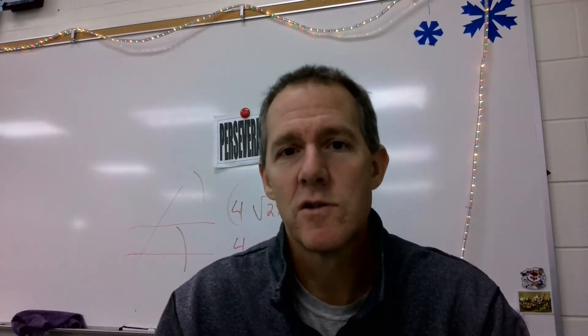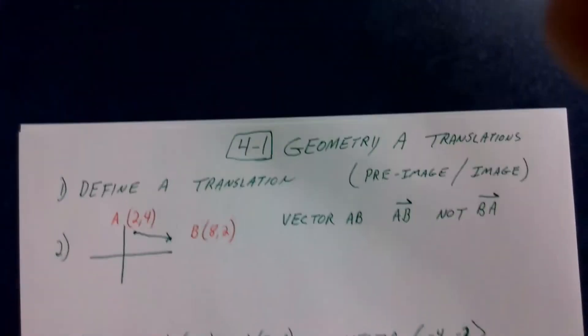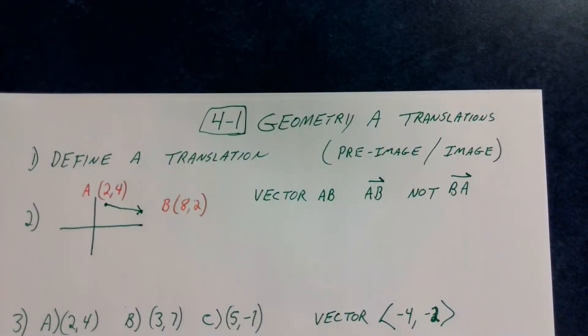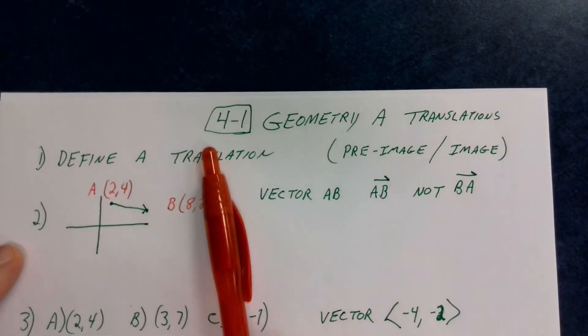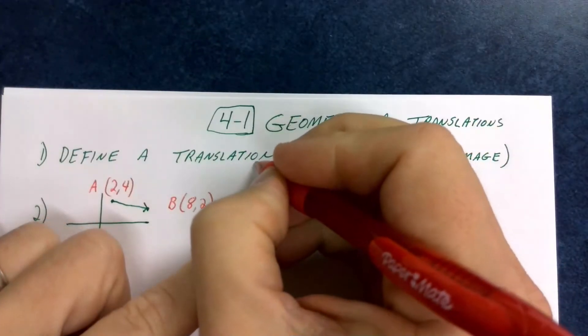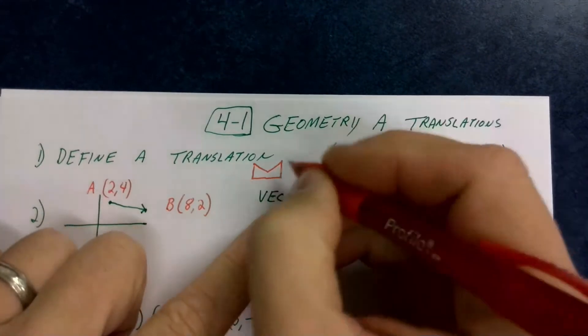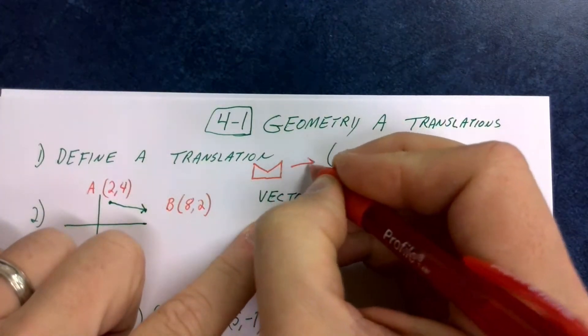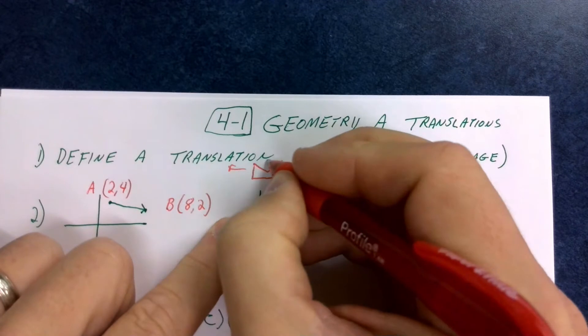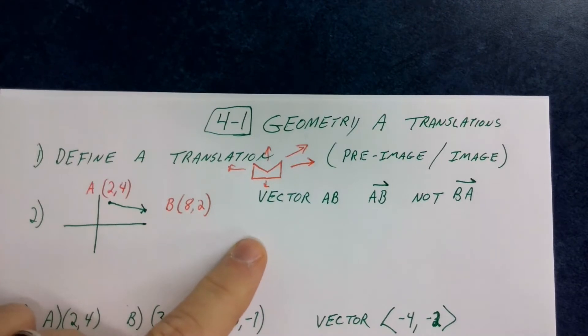So those are the things that we're going to talk about. We're going to start with translations right now in something called a vector. So first off, translation takes any shape like this. I'm going to make it that shape. And it can slide it horizontally either direction, up or down, or diagonally.